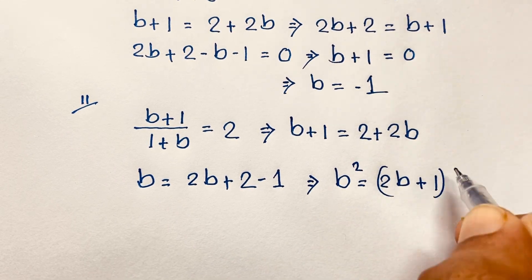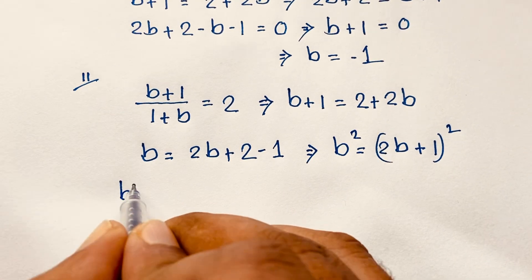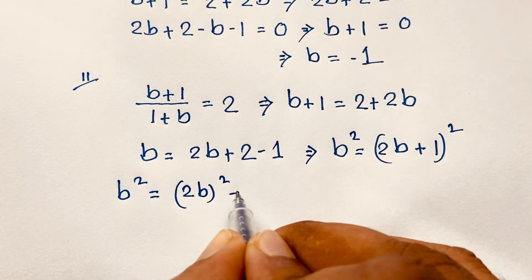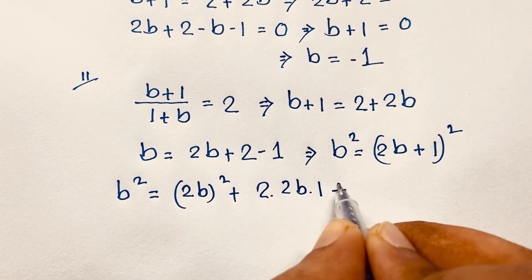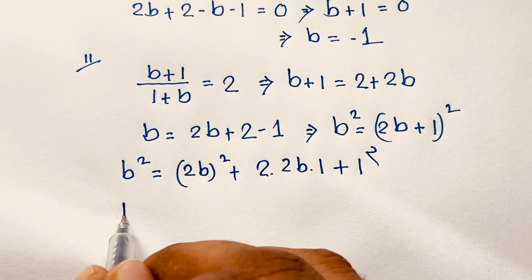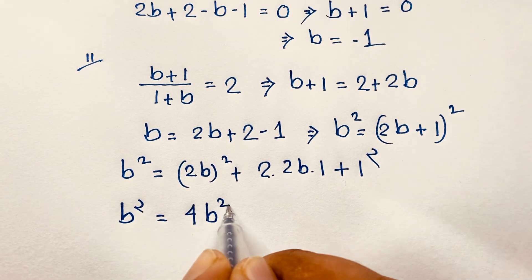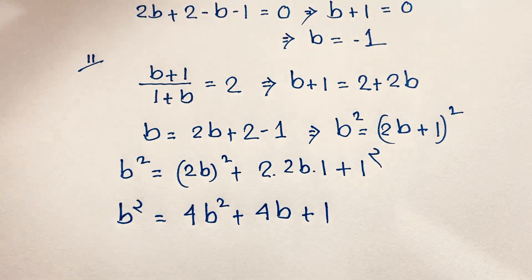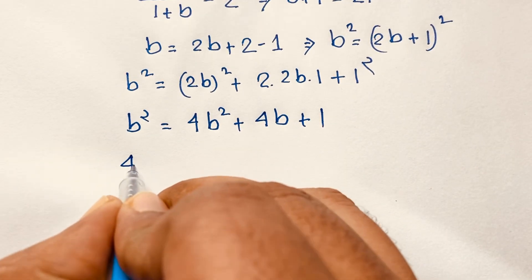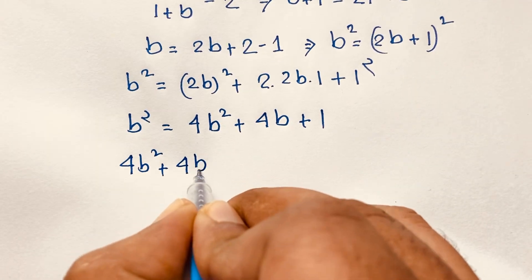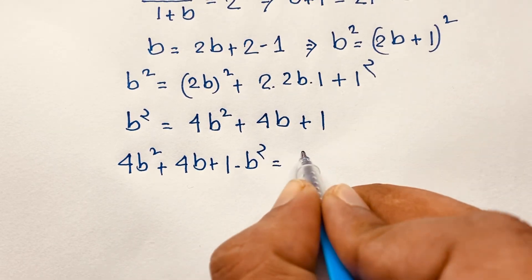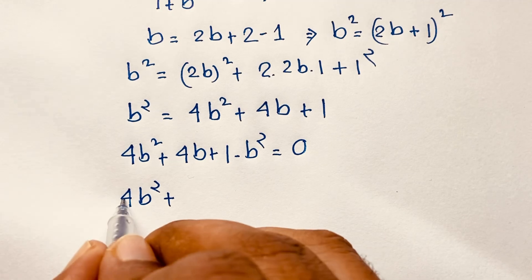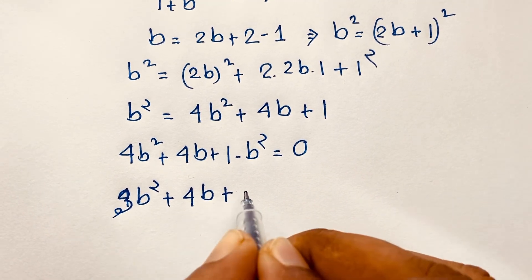Using the identity (a + b)² = a² + 2ab + b², squaring both sides gives: b² = (2b + 1)². Expanding the right side: (2b)² + 2(2b)(1) + 1² = 4b² + 4b + 1. Moving b² to the right: 4b² − b² + 4b + 1 = 0, which simplifies to the quadratic equation 3b² + 4b + 1 = 0.